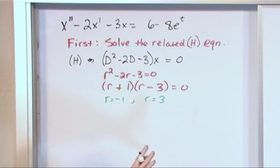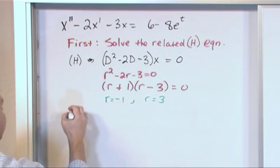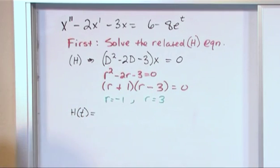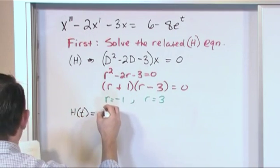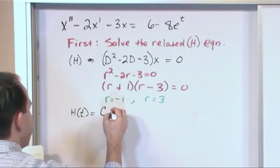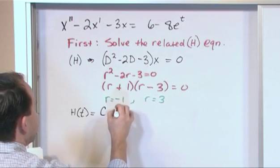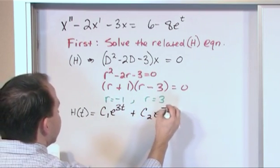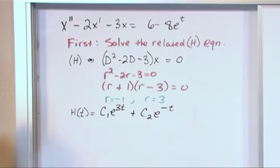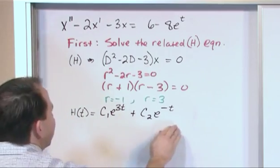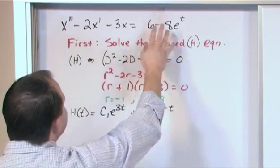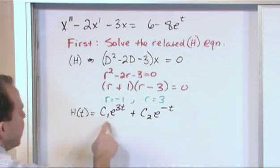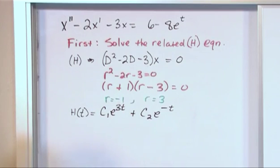We're not going to call it x of t because this is not the total solution — we're going to call it xh of t. The solution to the related homogeneous equation is constructed exactly like we've been doing before: c1 e to the 3t plus c2 e to the negative t. This literally is half of the total answer. Half the battle is just setting the right-hand side equal to 0, finding the related homogeneous equation, and this comes directly from the roots.